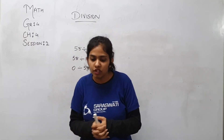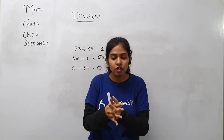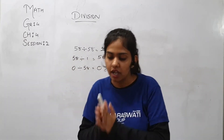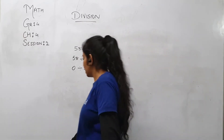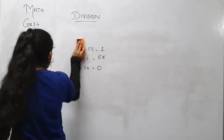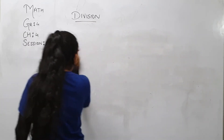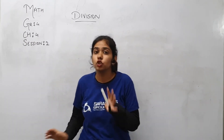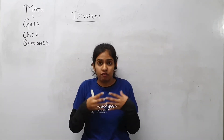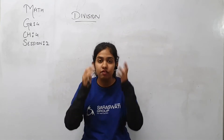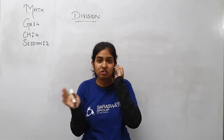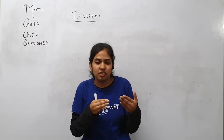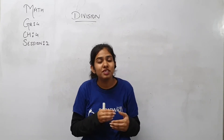We have done the recap of that. And now we are going to start with dividing a three digit number by a two digit number. For that, you first must know the tables. And if in case you don't know the tables, then this process will be quite lengthy for you. But if you know the tables, then you can easily and quickly do this.